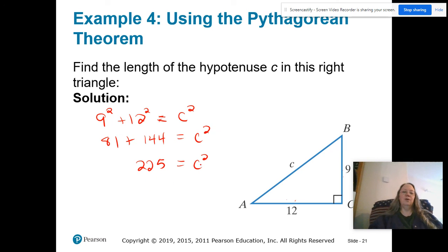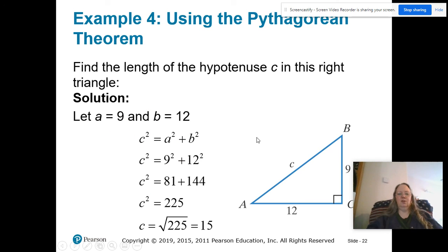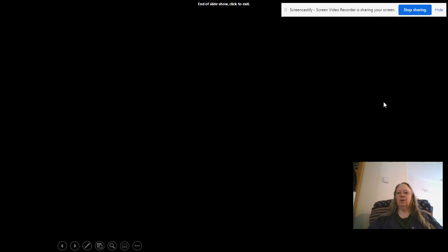Now a lot of students kind of mess up by not taking the square root. This is c squared. The square of the hypotenuse is 225, but we are looking for just the hypotenuse itself. So we need to take the square root and the square root of 225 should be 15. And let's check. And there it is. The hypotenuse would be 15.